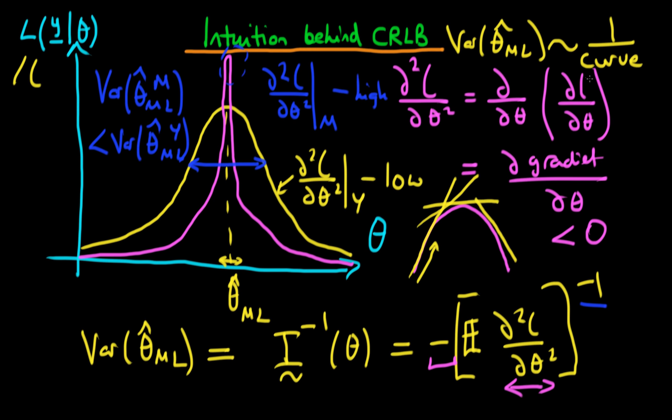Because of that, we can say that the variance of our maximum likelihood estimators is dependent on 1 over the curvature. If the curvature is high, like it is for the mauve line, then we are that much more sure of our estimates and hence the variance of our maximum likelihood estimators is that much lower.